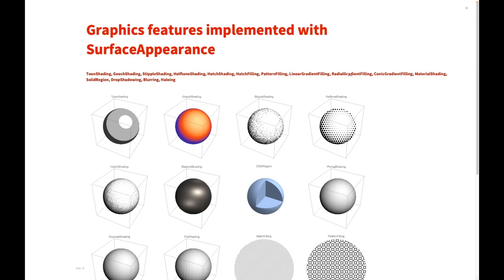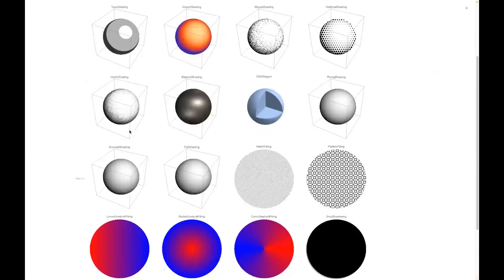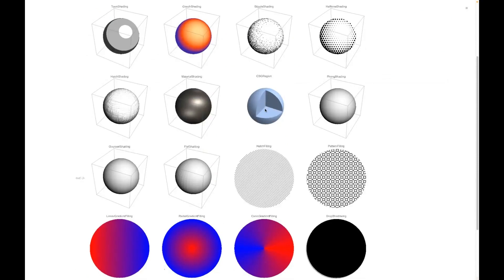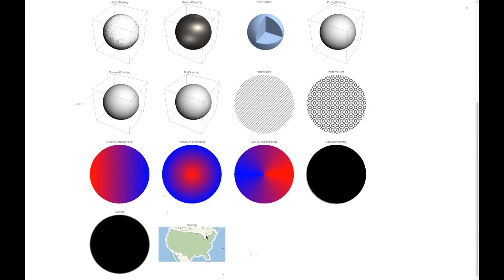Here is a list of features implemented with SurfaceAppearance. From the beginning, the toon shading and the CSG region — which is solid rendering using ray tracing — and up to the very newly introduced Halloween effect, they are all implemented with SurfaceAppearance. This gives you a rough idea of how flexible and powerful SurfaceAppearance can be.